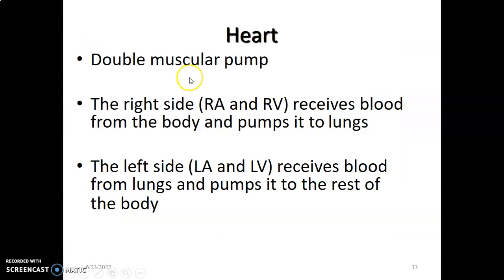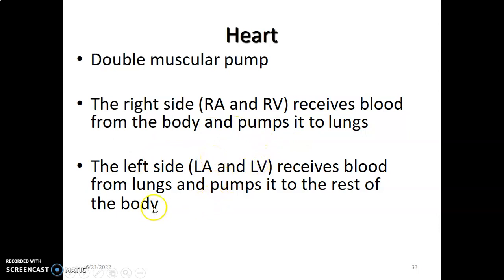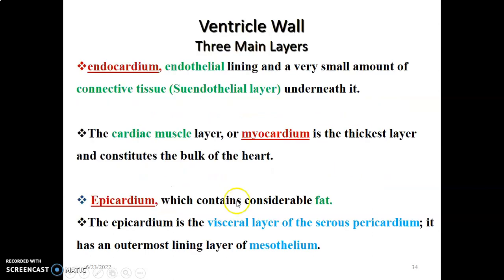Now we discuss the heart. The heart is a double muscular pump. It has a right side with the right atria and ventricle that receive blood from the body through the superior and inferior vena cava, and pumps this blood to the lungs for oxygenation. Oxygenated blood then enters the left atria through pulmonary veins, to the left ventricle, and out to the rest of the body through the aorta. The four chambers of the heart have three layers: inner endocardium, followed by myocardium, and epicardium.